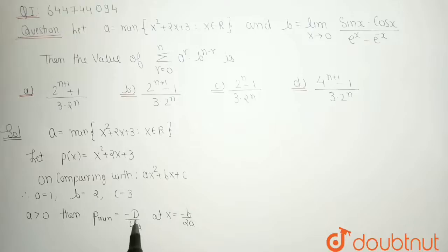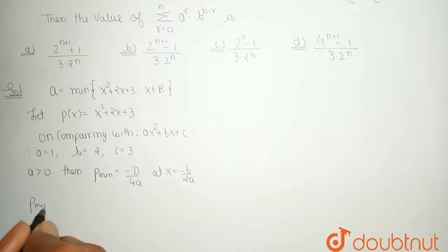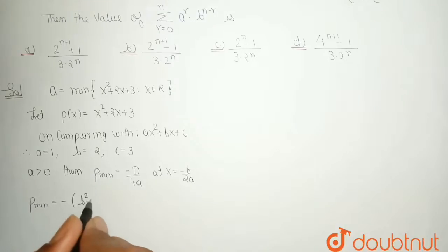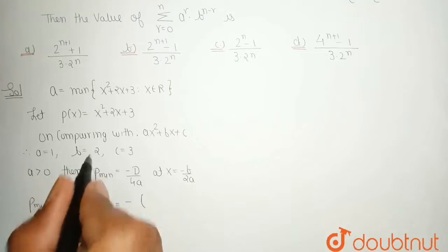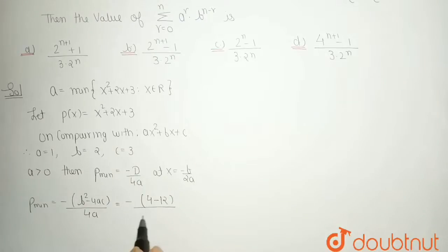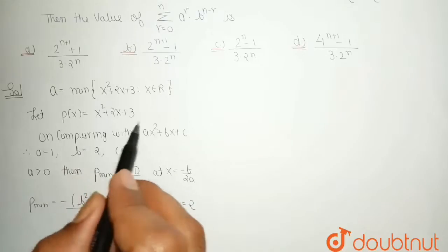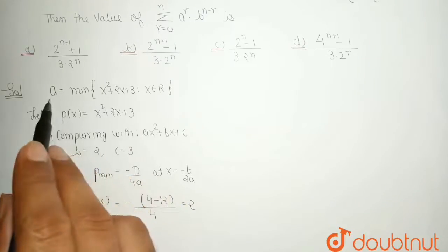Here D = b² − 4ac. So p_min = −(b² − 4ac) / (4a). Substituting: b = 2, so b² = 4; 4ac = 4 · 1 · 3 = 12. Therefore p_min = −(4 − 12) / 4 = −(−8) / 4 = 8/4 = 2. So the minimum value of this polynomial is 2.